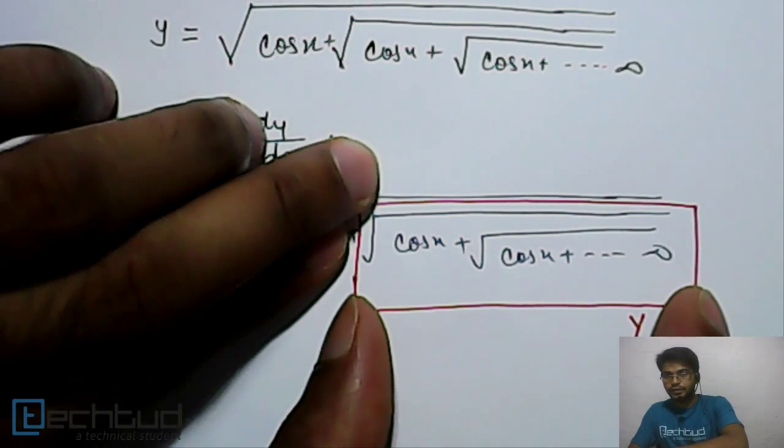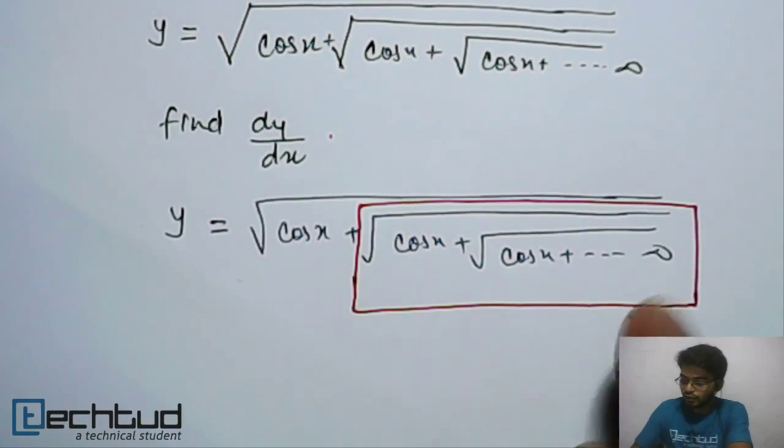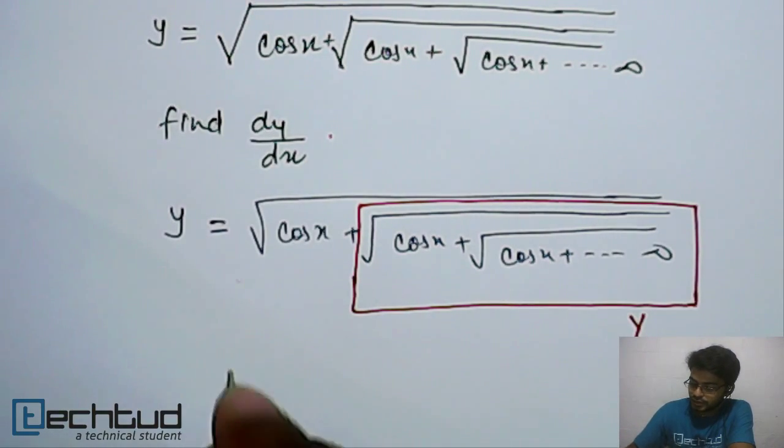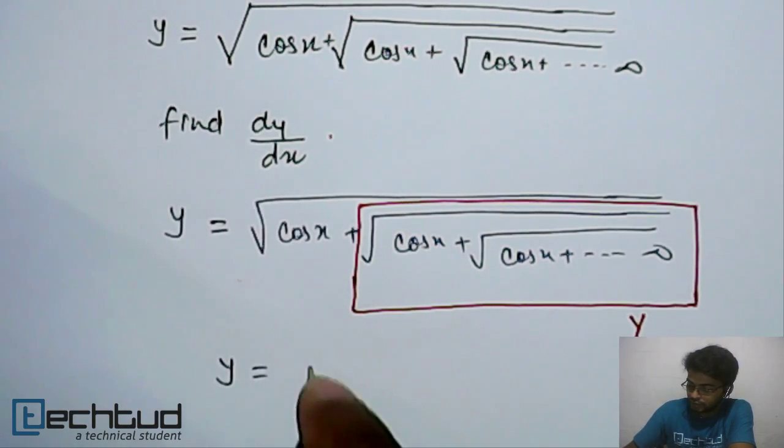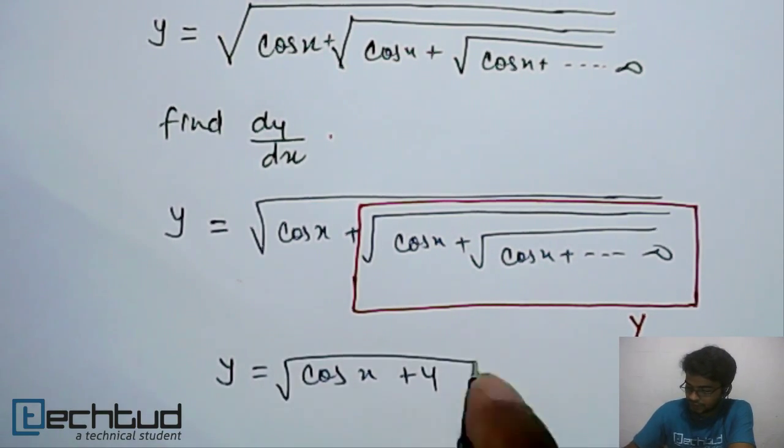So if we remove this one, because this is infinity, this is again also y. So the expression will be reduced like this: y equals the square root of cos x plus y. Fine.